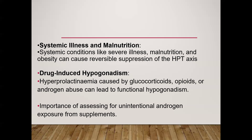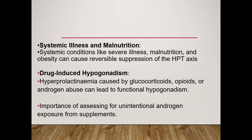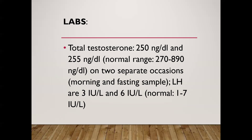It is also important to assess whether the patient was unintentionally exposed to androgens through over-the-counter supplements. These are all the clinical history points needed to identify the cause of hypogonadism. In our patient, total testosterone was measured on two separate morning fasting samples — both low at 250 and 255 ng/dL, with a normal range of 270–800 ng/dL. LH and FSH appeared normal.